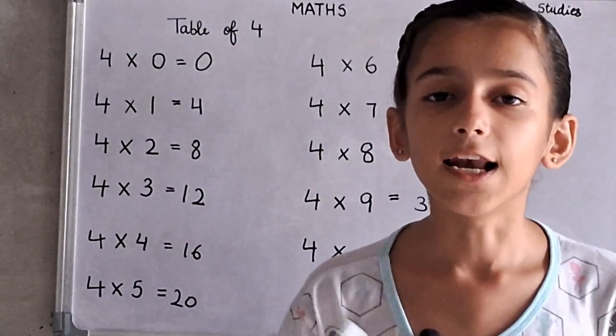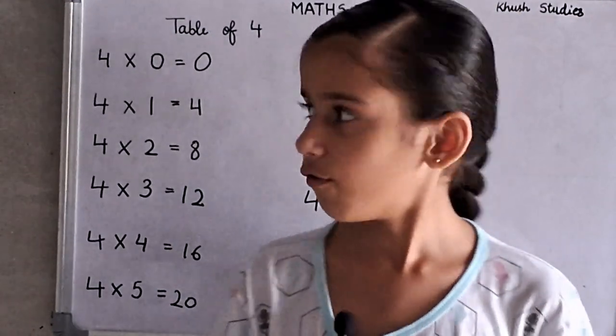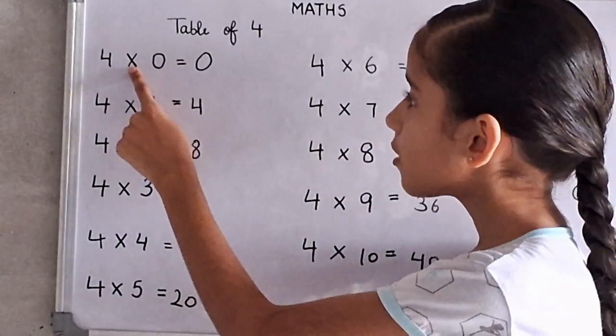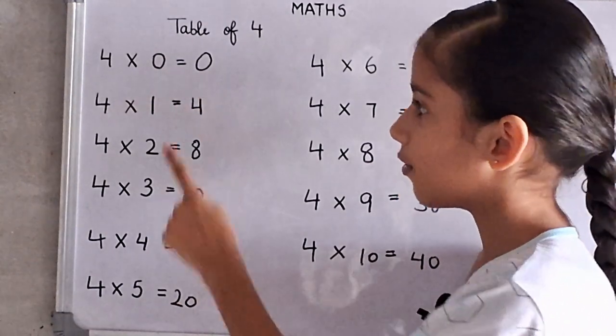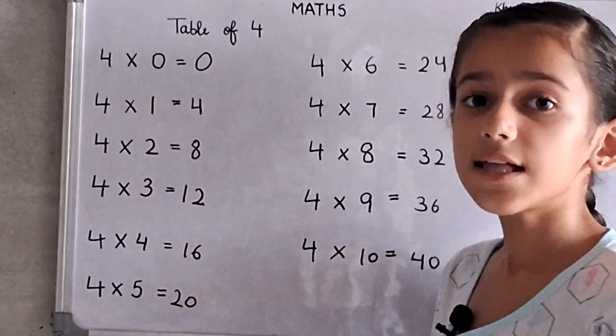Now we will learn the table of 4. 4 times 0's, 0. For 0's, 0.